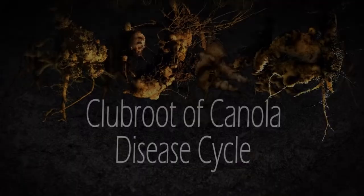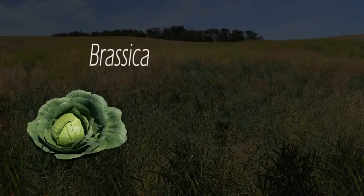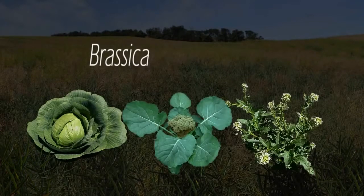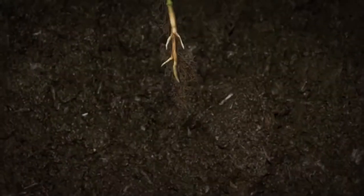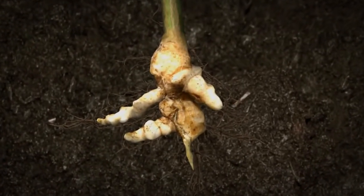Clubroot is a serious disease of canola and other crops in the Brassica family, including cabbage, broccoli, and even weeds such as stinkweed. Growth of infected roots is disrupted, resulting in distinctive club symptoms on plant roots.